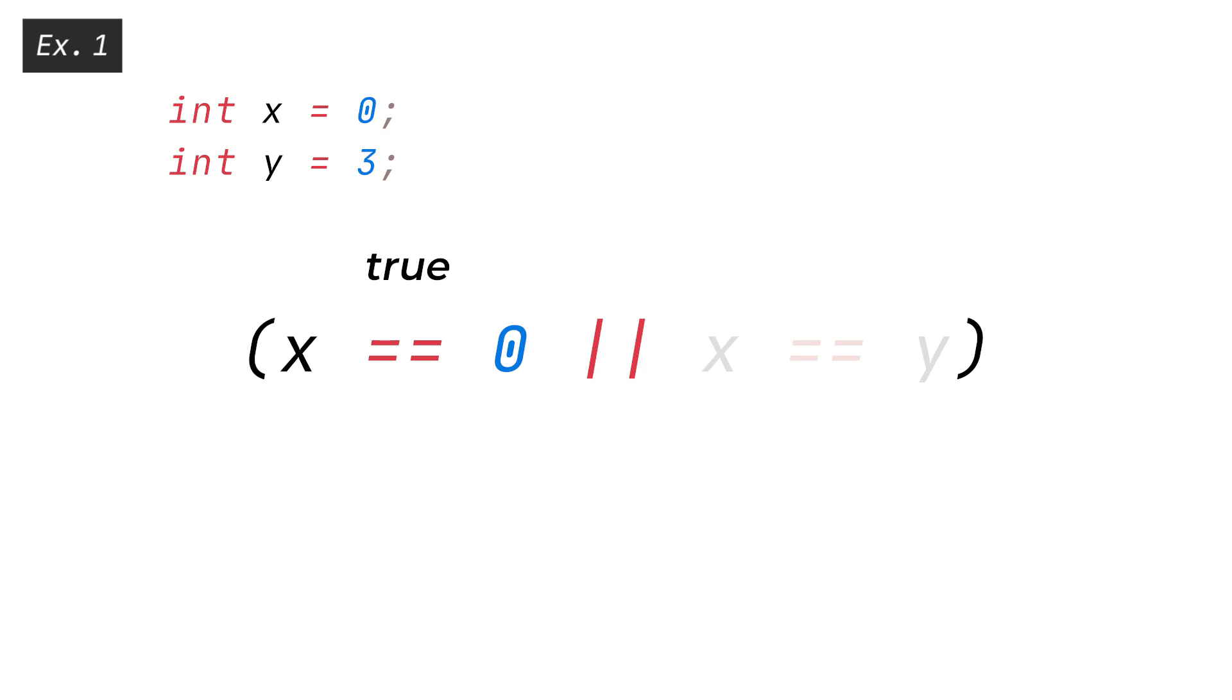This is because when Java's OR-OR operator encounters this code, it first evaluates X equals equals 0, which we just determined returns true. Then it realizes that the condition X equals equals 0, OR, whatever, must be true, regardless of what the WHATEVER statement is.